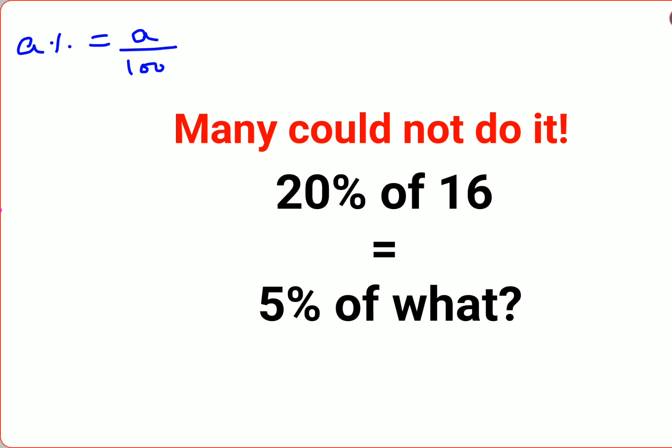We have 20 upon 100 into 16 equals 5 upon 100 into x. And since we want to find the value of x, we will multiply both sides by 100 and divide both sides by 5.